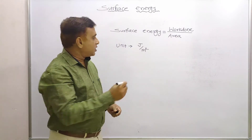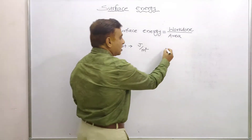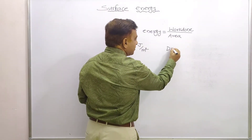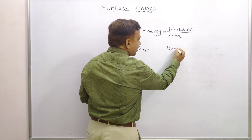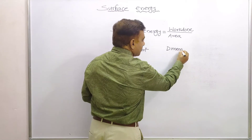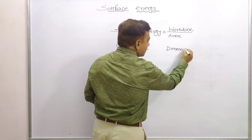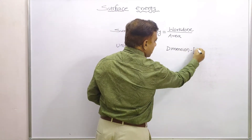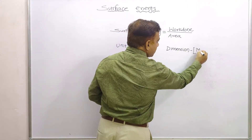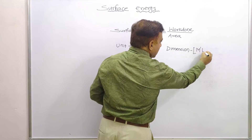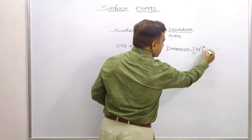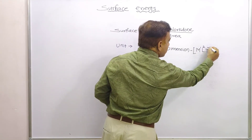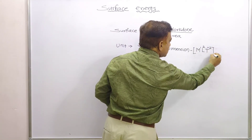The dimension of surface energy is given by M¹ L⁰ T⁻², wait — M¹ L² T⁻² ... actually the dimension is M raised to power 1, L raised to power 2, T raised to power minus 2.